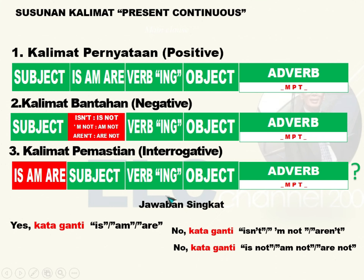Susunan kalimat Present Continuous: kalimat pernyataan positif mempunyai susunan subjek diikuti to be is/am/are, kemudian verb-ing, objek, dan MPT (manner, place, time). Pada kalimat negatif, yang ditambahkan not adalah to be-nya: is not/isn't, am not, are not/aren't, diikuti verb-ing, objek, dan MPT.